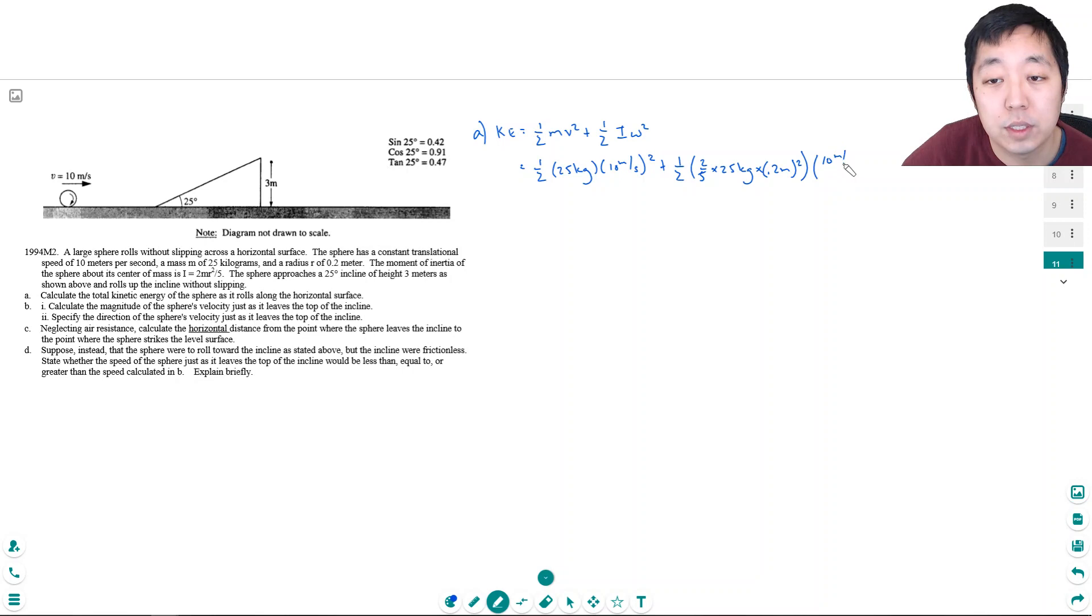And then omega is v over r. So I do 10 meters per second divided by, because remember the v is equal to r omega. So omega is v over r. So when I plug into the calculator, hopefully I did this right, 1750 joules is what I got. Okay, so that's the total kinetic energy it initially has.